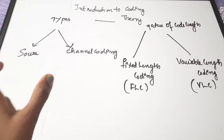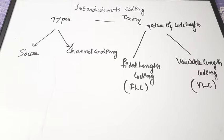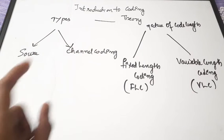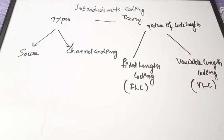Source coding is done in order to compress your information. The source is where the information or message is generated, and we do source coding to compress the size of the message. The aim of channel coding is to avoid or combat errors while the signal is traveling through the channel.